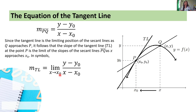As illustrated earlier, when we locate points on the left side of Q and draw secant lines — another point, a secant line between that point and P — getting closer and closer until we obtain line TL. As we take points to the left of Q, our x also approaches x₀.